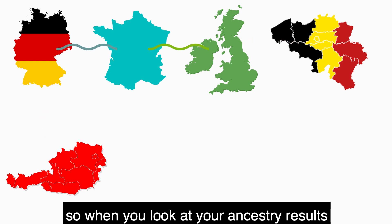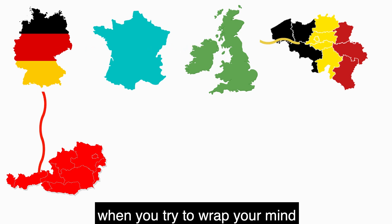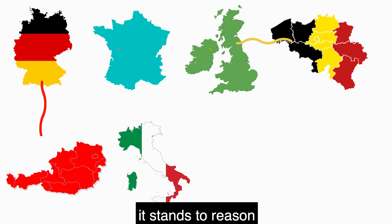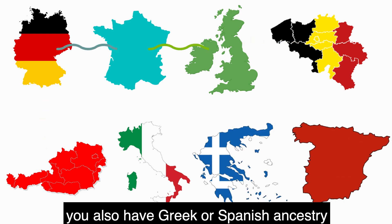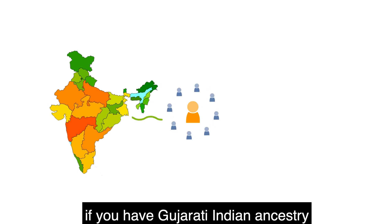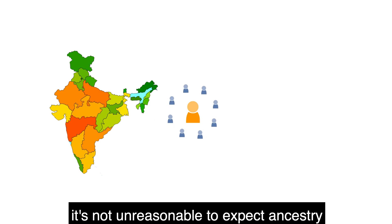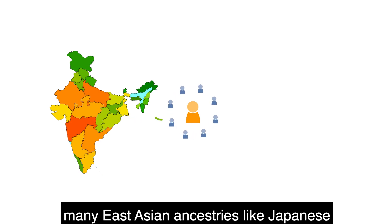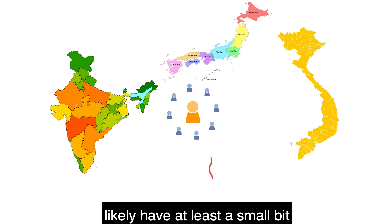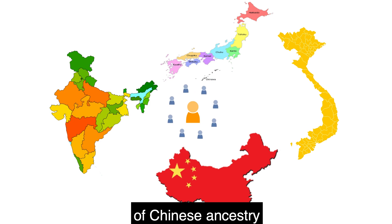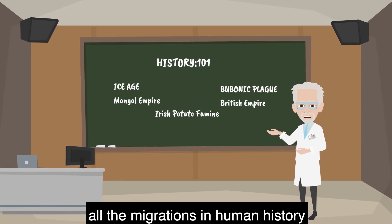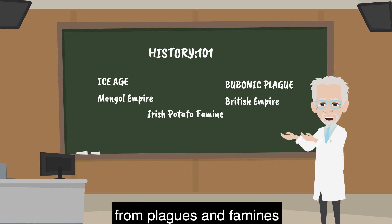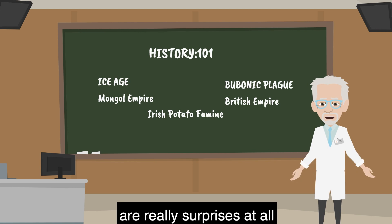So when you look at your ancestry results, keep the histories of each region in mind when you try to wrap your mind around some surprises. If you have Italian ancestry, it stands to reason you also have Greek or Spanish ancestry you didn't know about. If you have Gujarati Indian ancestry, it's not unreasonable to expect ancestry from other populations in South Asia, such as Bengali or Punjabi. Many East Asian ancestries like Japanese or Vietnamese likely have at least a small bit of Chinese ancestry. When you think about all the migrations in human history — whether for war or trade or colonization, or even to escape from plagues and famines — none of these surprises are really surprises at all.